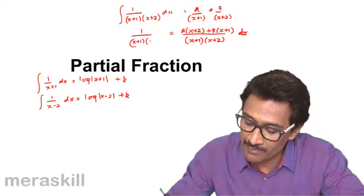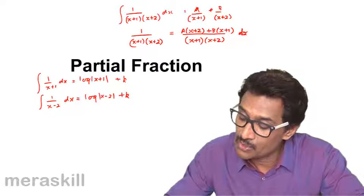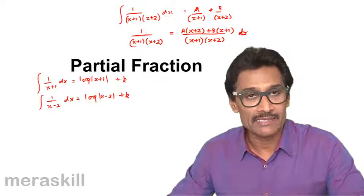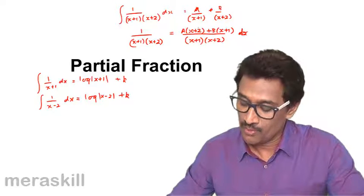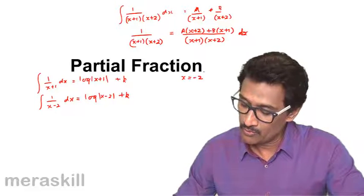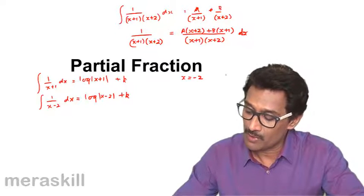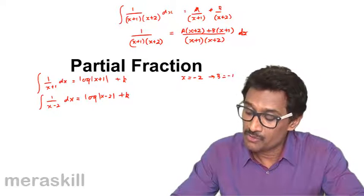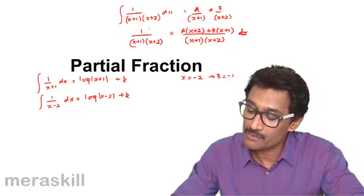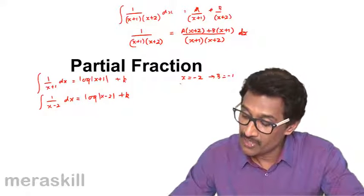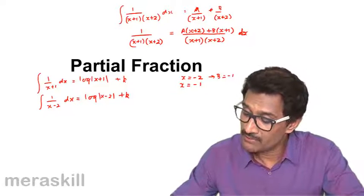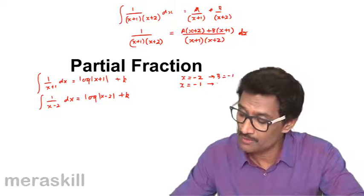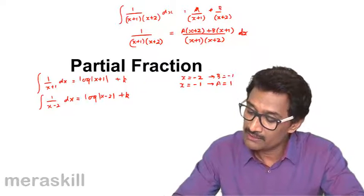Both expressions are equal, so A(x+2) + B(x+1) = 1. We choose values of x to eliminate one variable at a time. Put x = -2: B(-2+1) = 1, so -B = 1, giving B = -1. Put x = -1: A(-1+2) = 1, so A(1) = 1, giving A = 1.